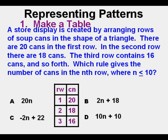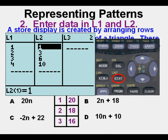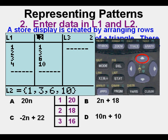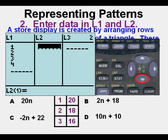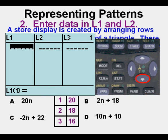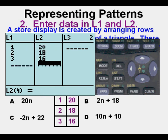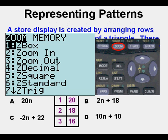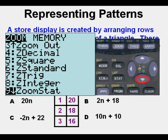Then we enter the data in L1 and L2. We go to stat, enter. We have the data from the old problem here. To get rid of it, we arrow up to L2, press clear, then press the down arrow. Let's clear out L1 by arrowing up to it, pressing clear, then down arrow. Now we can enter our three points.